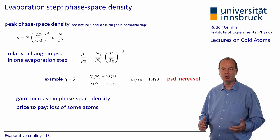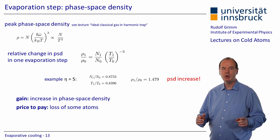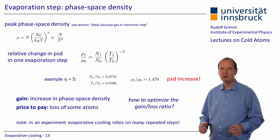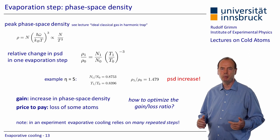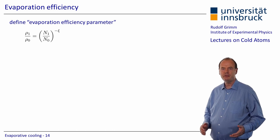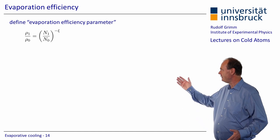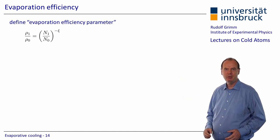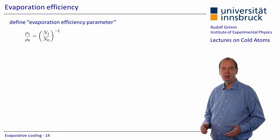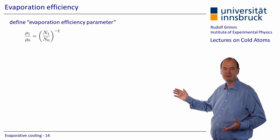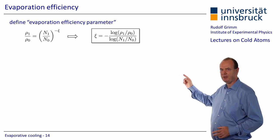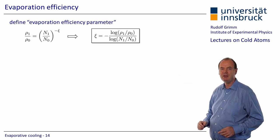This leads us to a question which is very important for the experiments: how can we optimize the gain-to-loss ratio? Just note that a real experiment relies on many repeated steps, and we want to optimize the whole process. To characterize the evaporation efficiency, we introduce a corresponding parameter Xi, as defined here. For a single evaporation step, we assume that the gain in phase space density is related to the decrease of the number by a power law, with the exponent being minus Xi. This efficiency parameter is often expressed as the logarithmic gain in phase space density over the logarithmic decrease of the particle number.